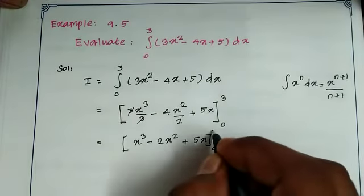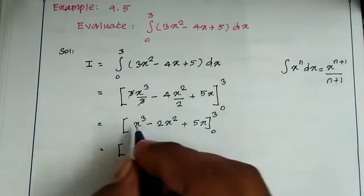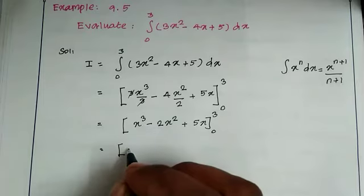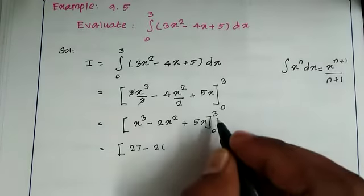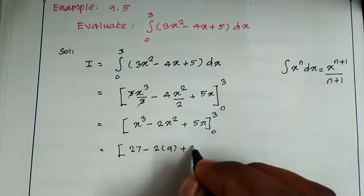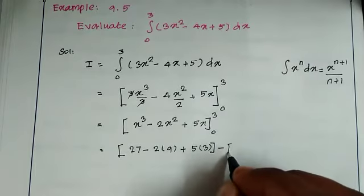First, upper limit minus lower limit. Upper limit, x equals 3: substitute 3 cube, that is 27, minus 2 into 3 square, 9, plus 5 into 3.